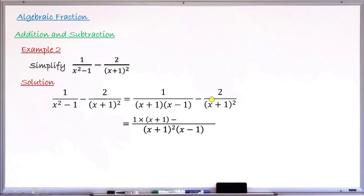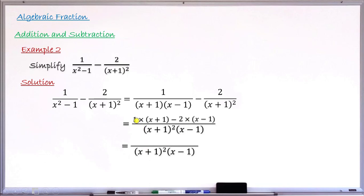Then dividing the LCM by the second denominator (x+1)²: (x+1)² cancels, leaving (x−1), and (x−1) times 2 gives 2(x−3). Performing the multiplications: 1×(x+1) = x+1, and −2×(x−1) = −2x+2. So the numerator is x+1−2x+2.